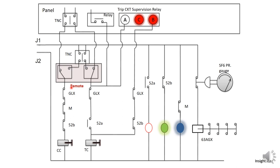Now let us understand another important part of the breaker: the local and remote switch. When the switch is connected to local mode, it gets connected to the TNC switch inside the circuit breaker and it gets operated locally from that TNC switch. Also, whenever the local mode is operated, the breaker can always trip in the protection mode as well. When it is connected to remote mode, the switch is connected through the panel TNC switch, so you can operate the circuit breaker remotely from the control room panel.